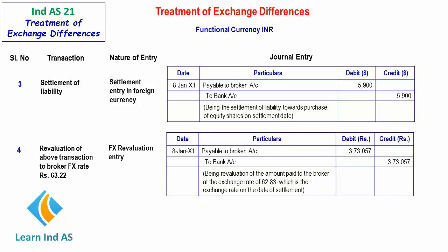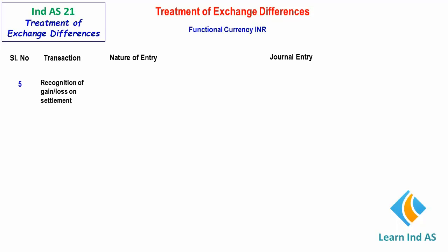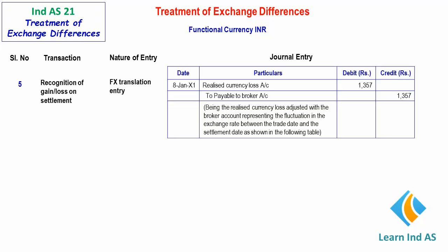On settlement of the liability to the broker, there will be either a profit or loss due to fluctuation in the foreign exchange rate between the date of purchase and the date of settlement. In this case, the currency has moved against the entity, resulting in a loss on settlement of the liability to the broker. The FX translation entry is passed on the date of settlement as shown here, and the gain or loss on settlement is computed as shown here.